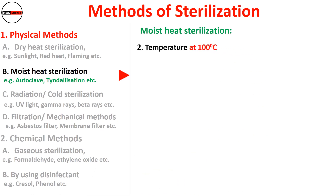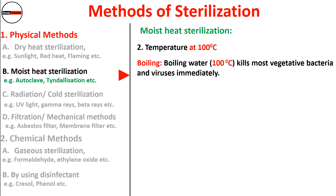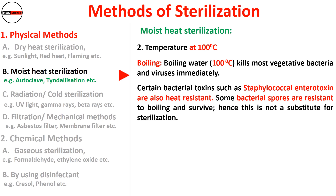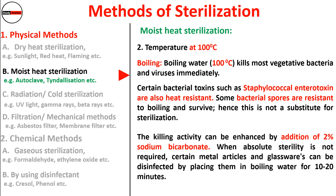At 100°C: boiling water at 100°C kills most vegetative bacteria and viruses immediately. Certain bacterial toxins such as staphylococcal enterotoxin are heat resistant, and some bacterial spores survive boiling — hence boiling is not a substitute for sterilization. The killing activity can be enhanced by the addition of 2% sodium bicarbonate. When absolute sterility is not required, certain metal articles and glassware can be disinfected by placing them in boiling water for 10 to 20 minutes.